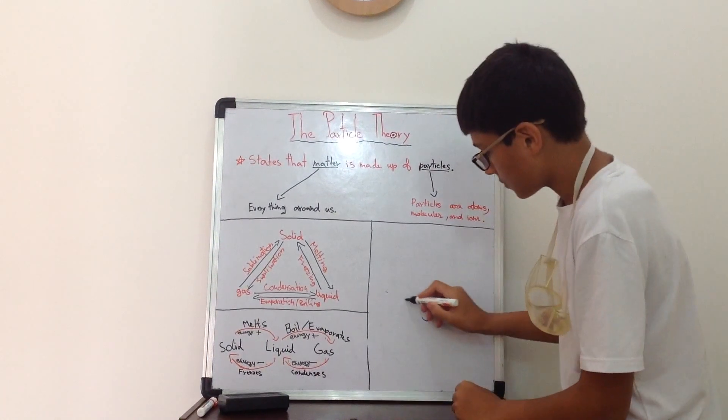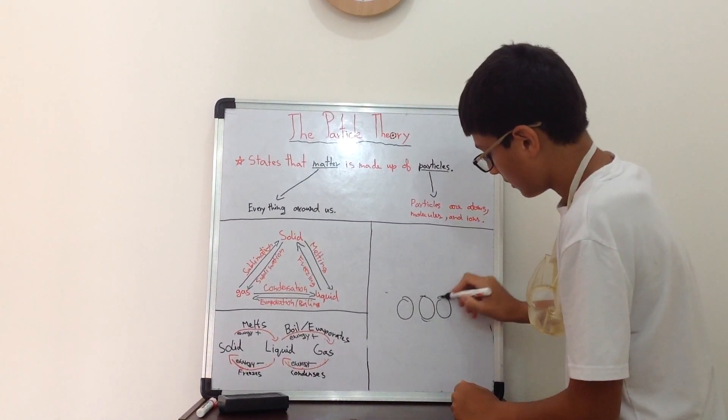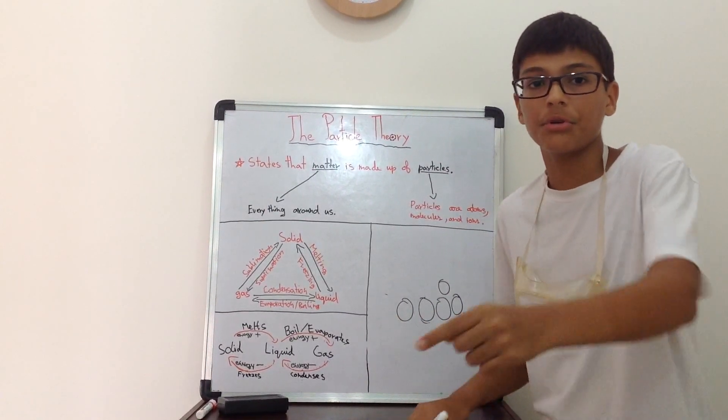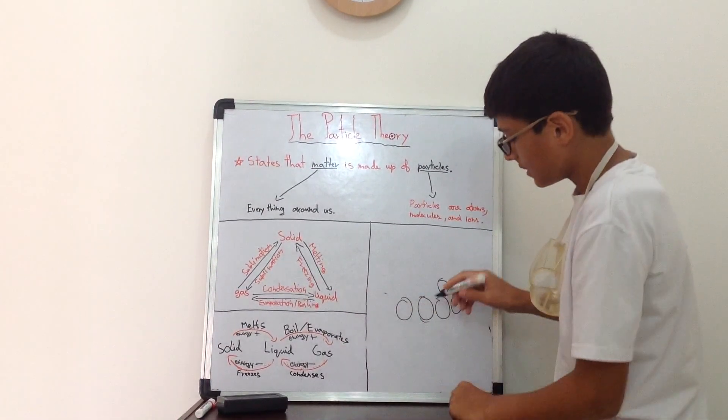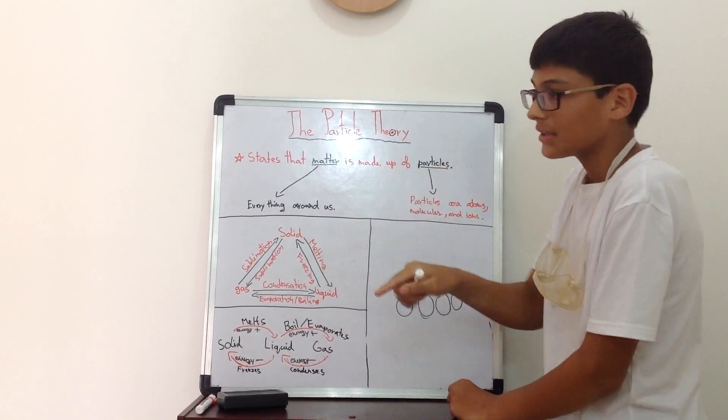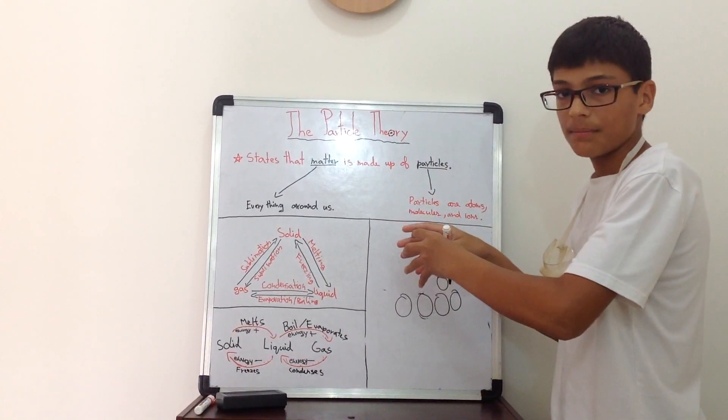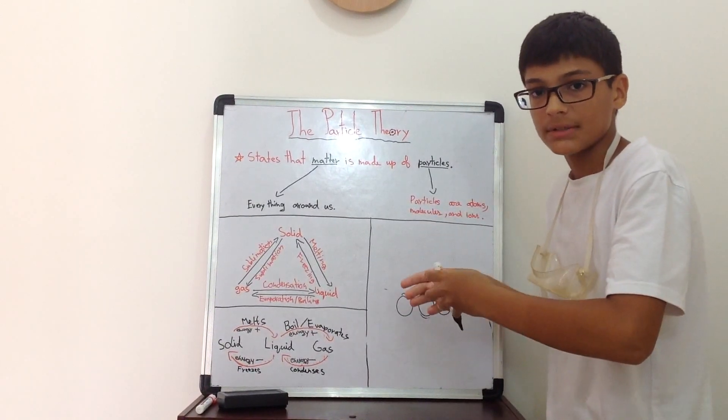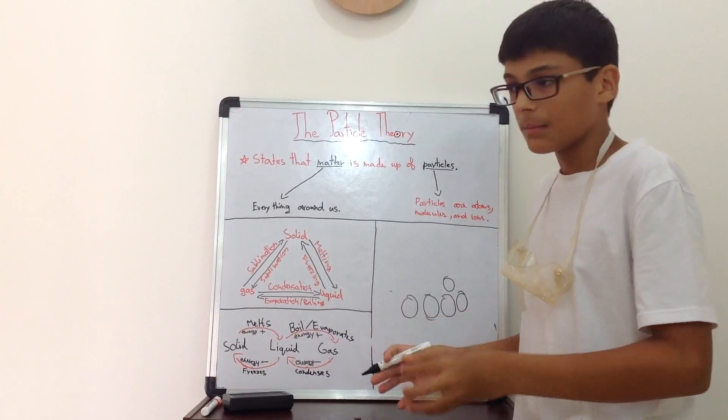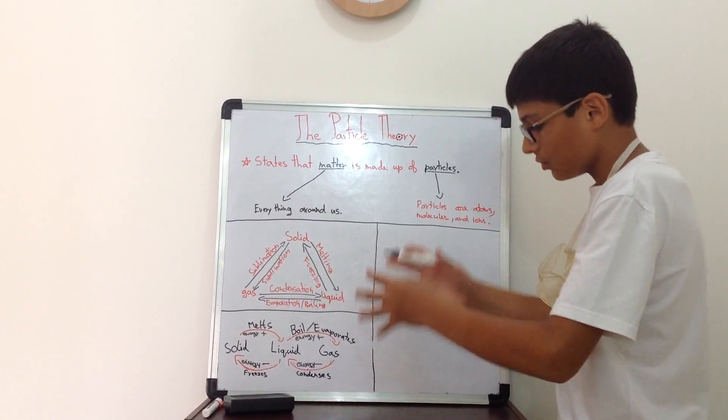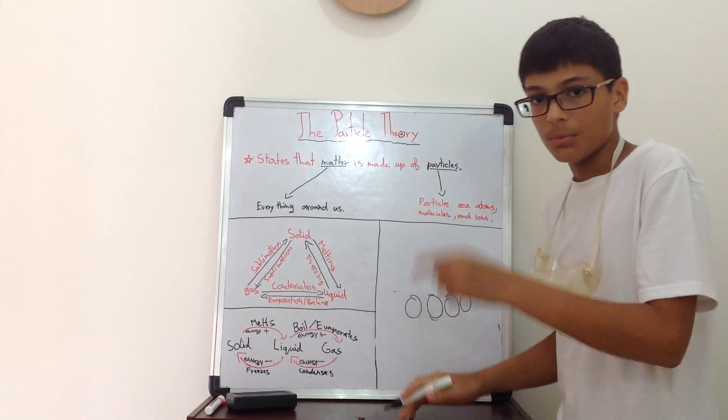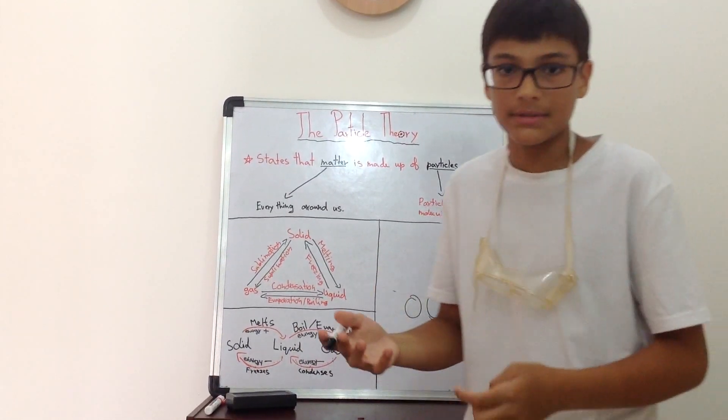Evaporation is when a liquid turns into a gas over a range of temperatures. That means that the fast-moving particles at the top level of the water start going into the air and turning into gas. That's when evaporation occurs. But when boiling occurs, the same thing happens that now a huge amount of water is heated to its boiling point. Let's say water. It's heated to 100 degrees Celsius.